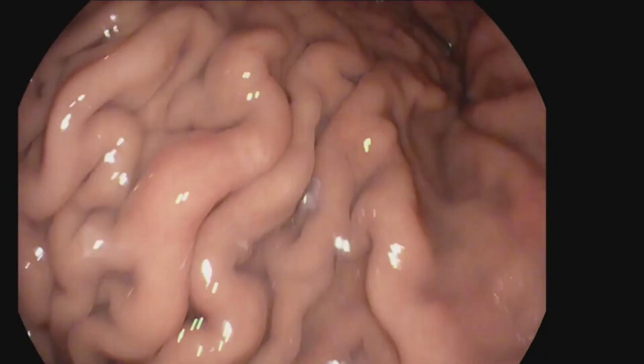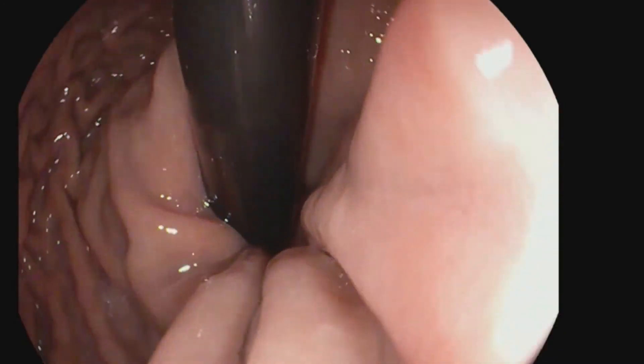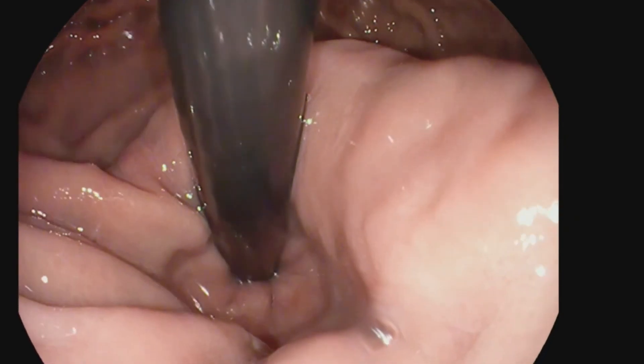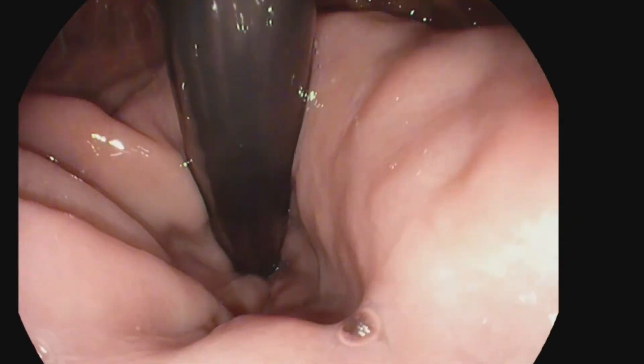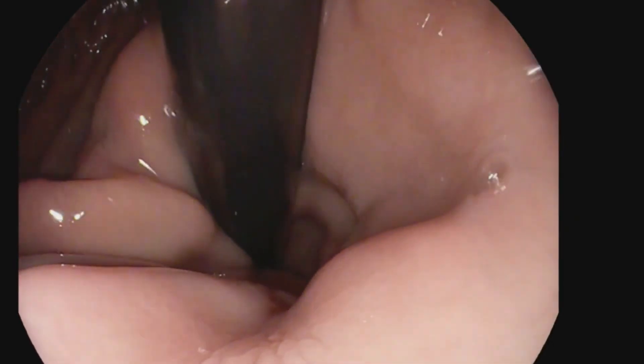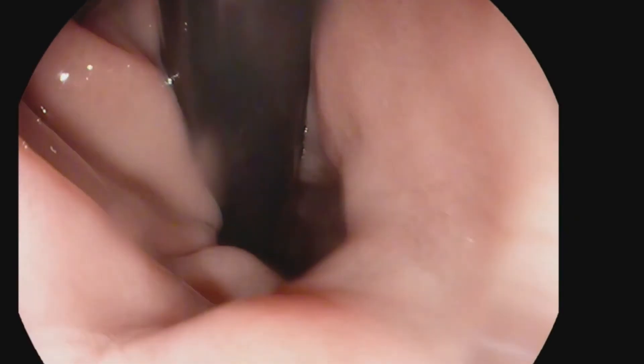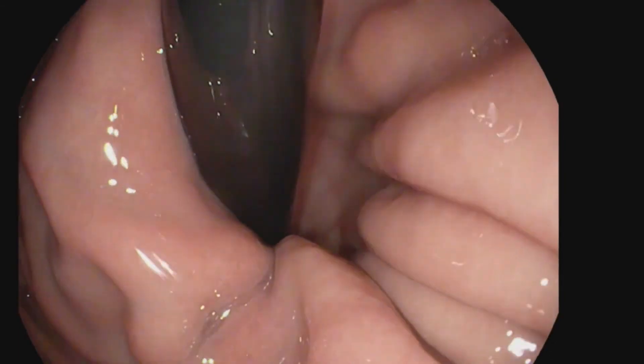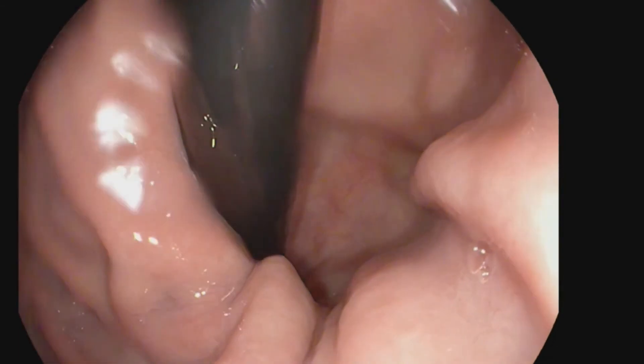For a Hill-grade 3, we can see that once we are fully insufflated, the hiatus maintains a gap off of the scope and never grips the scope for any significant period of time. The mouth of the hiatus often widens with inspiration but never fully closes.